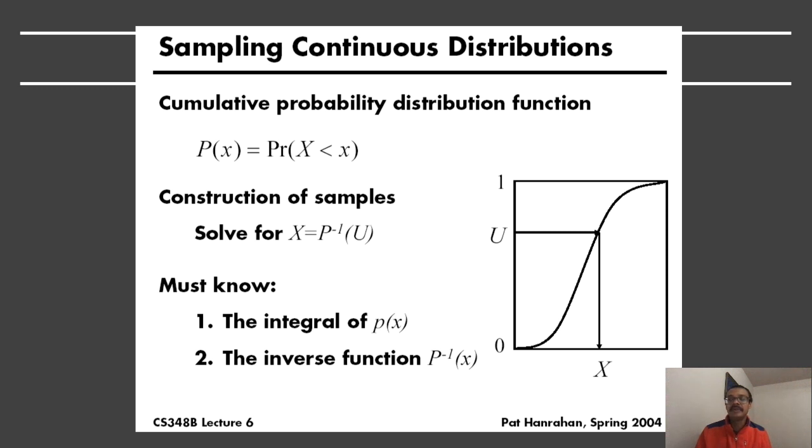How do we sample continuous probability distributions? I want to acknowledge my PhD advisor, Pat Hanrahan, from whom I have taken a few of these slides. You can do this by what is known as inverting the cumulative distribution function.